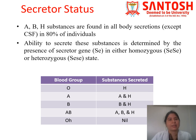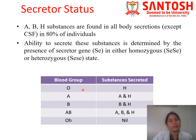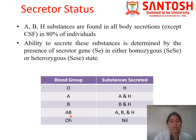A, B, and H substances are found in almost 80% of individuals in all body secretions except CSF. The ability to secrete these substances is determined by the Se gene when present in homozygous or heterozygous state. Blood group O secretes H substance; group A secretes A and H; group B secretes B and H; group AB secretes A, B, and H. Bombay blood group — which has absence of H antigen — has nothing in their secretions.